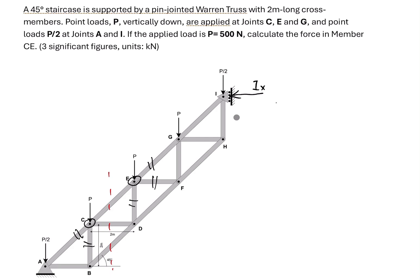To solve for the reaction force Ix, we write the moment equation of equilibrium at support A, equal to zero. We assume the positive direction is clockwise. The force P/2 at A has no moment. The force P at joint C has a lever arm of AB = 2m, and its moment is clockwise, so it's positive: P × 2.